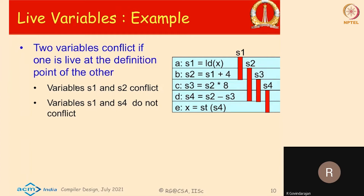In this particular example, variable S1 is live when S2 is being defined, therefore S1 and S2 conflict with each other. Similarly, variable S2 is live when S3 is being defined, therefore S2 and S3 conflict. Whereas if you look at S1 and S4, neither S1 is live when S4 is being defined, nor S4 is live when S1 is being defined. Therefore, S1 and S4 do not conflict with each other and can possibly share the same register.